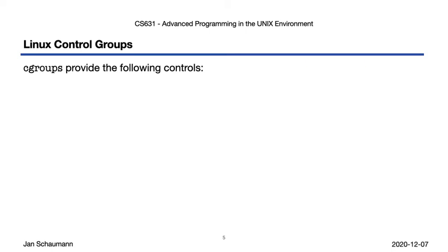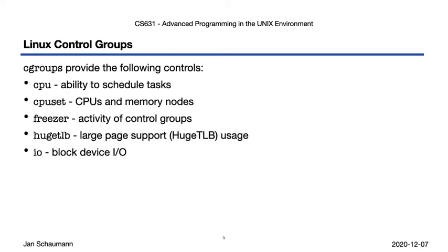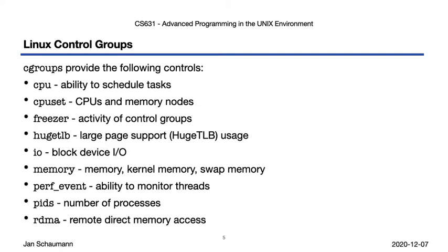Cgroups were redesigned at least once, and version 2 now supports the following controls: the ability to schedule tasks; CPU and memory utilization; the activity of control groups themselves — tasks in a frozen group could then not be scheduled, for example; large page support and usage; block device I/O; memory, kernel memory, and swap memory; the ability to monitor threads; restrictions on the number of processes available; as well as NUMA memory access.